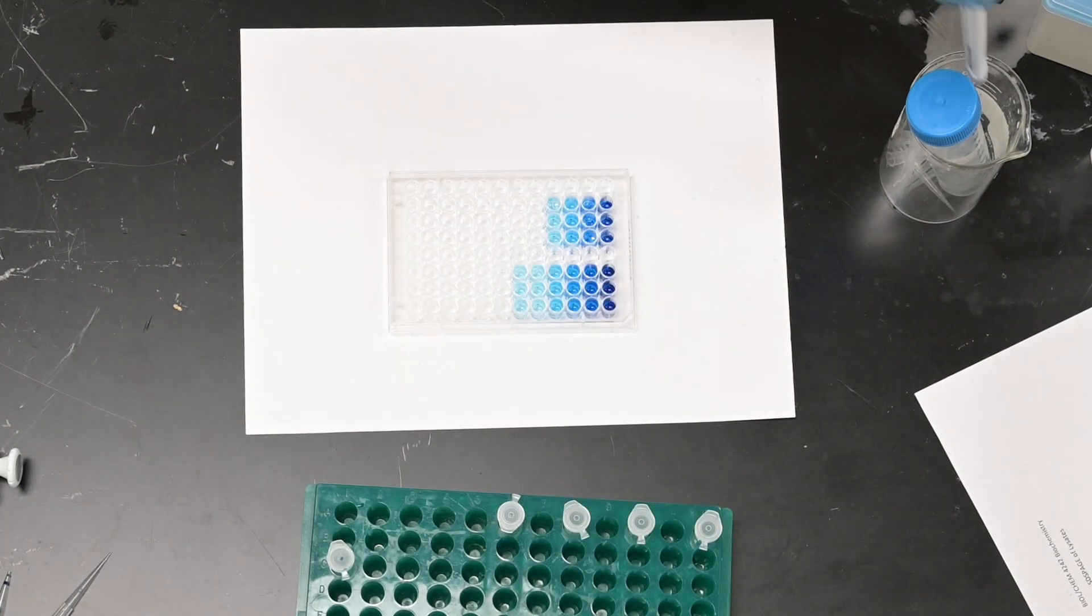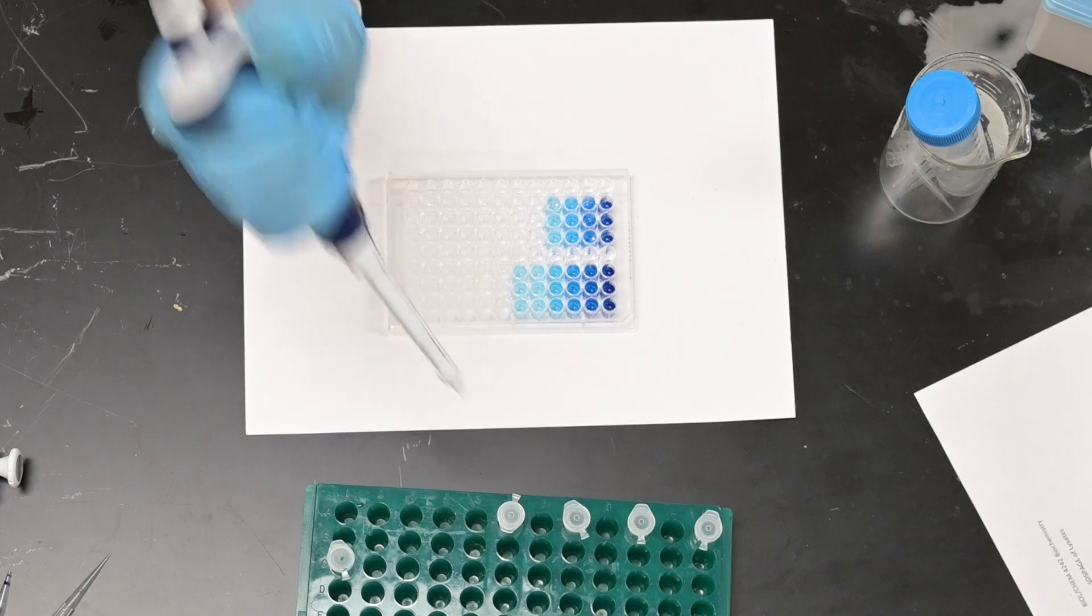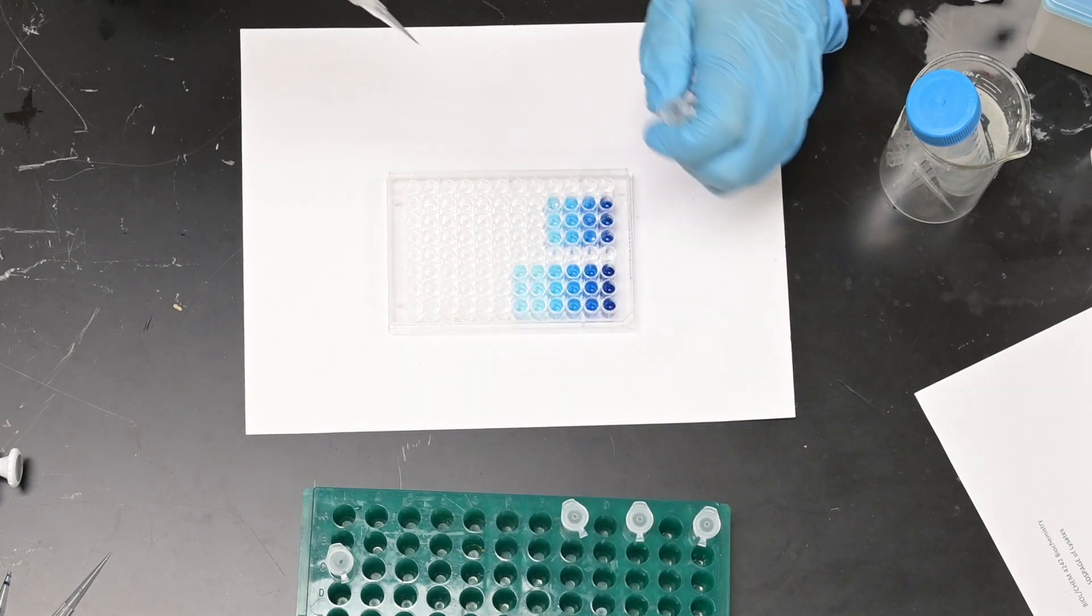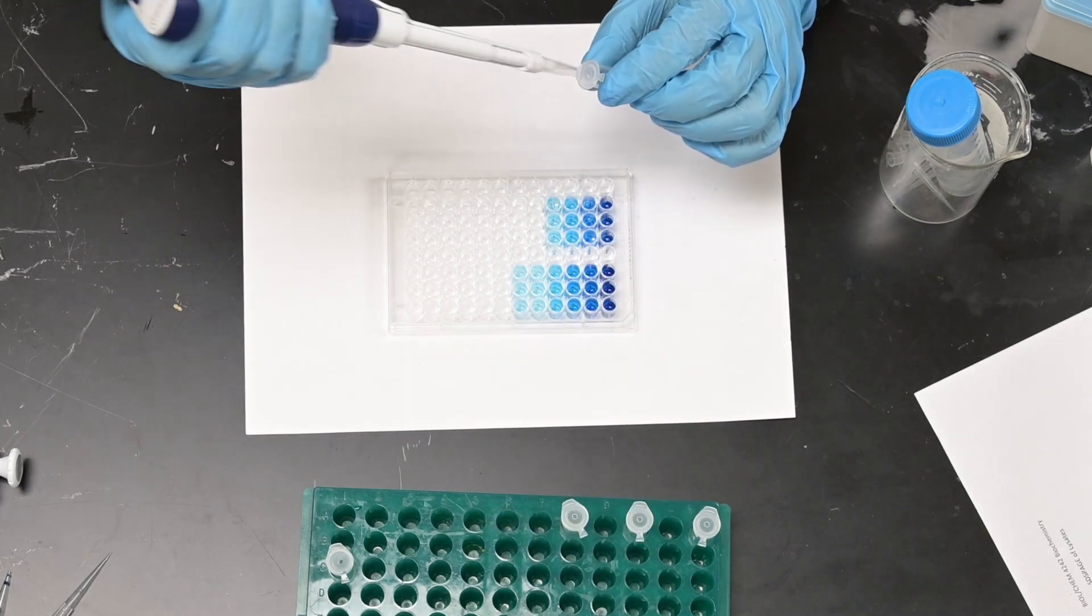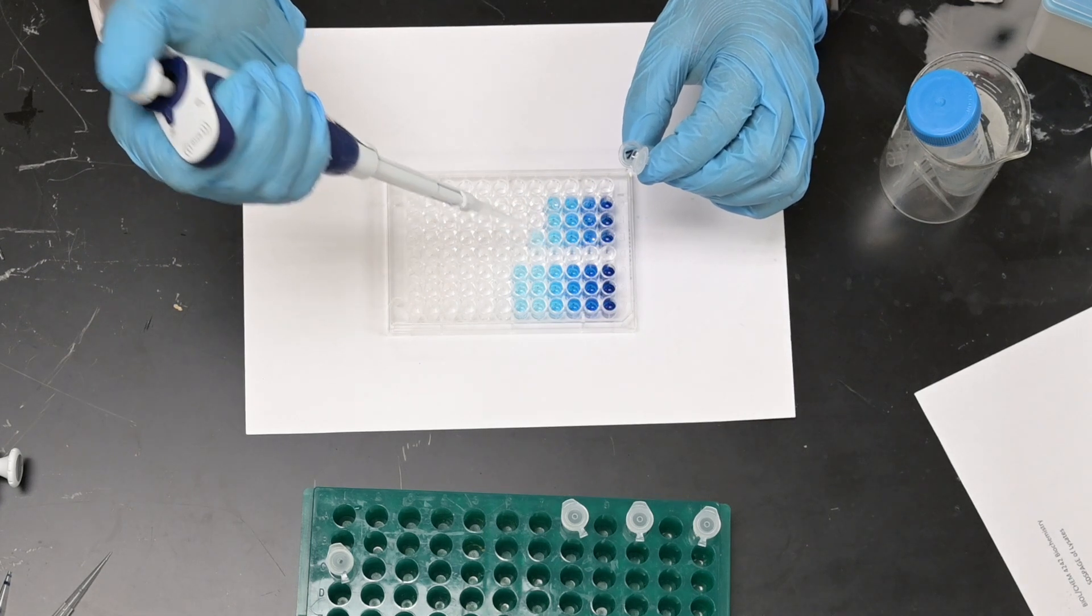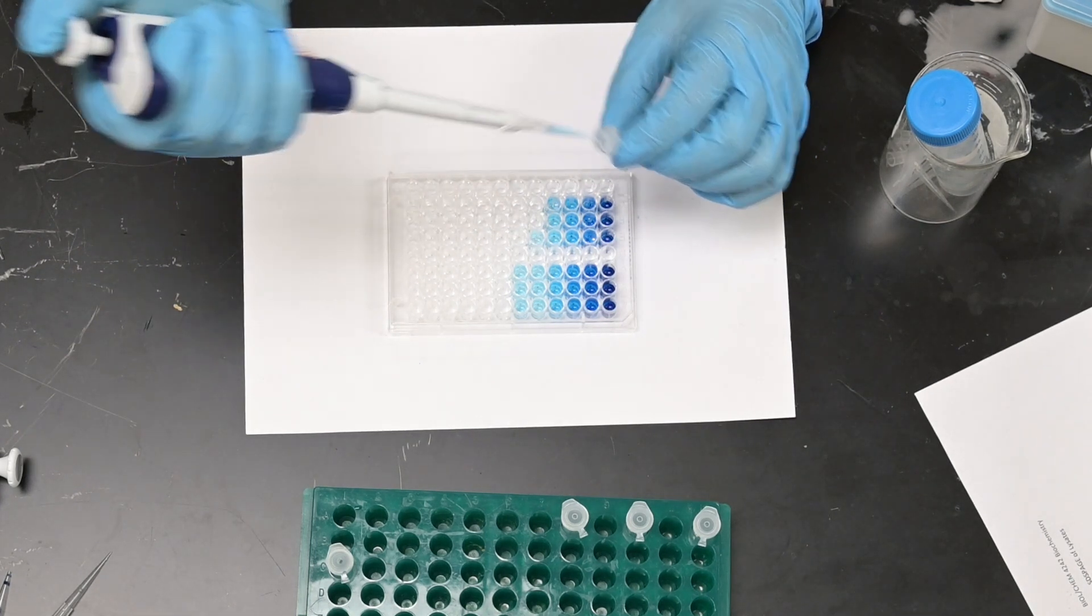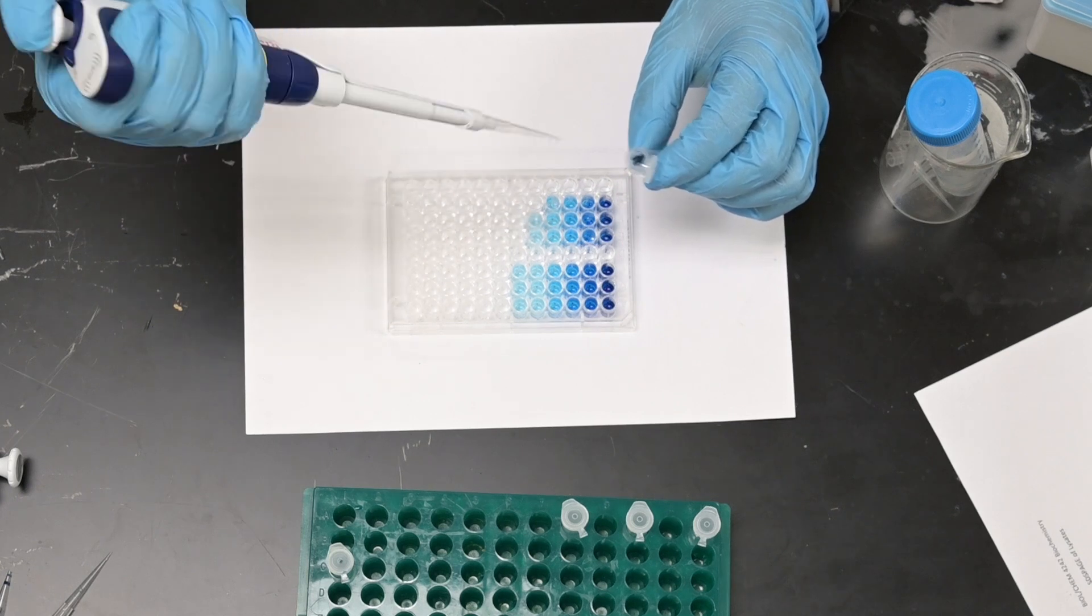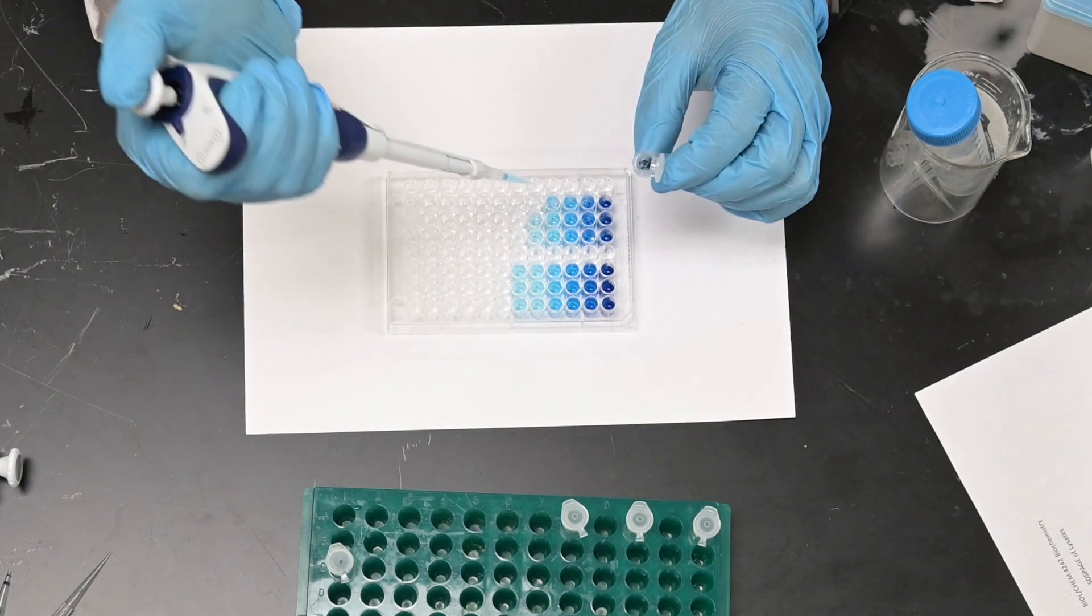And in this case, since each of these samples are independent of each other, I'm actually changing pipette tips in between each sample. Now it's time to do the one-sixteenth concentration, the 0.06 concentration, and add that to E5, F5, and G5.